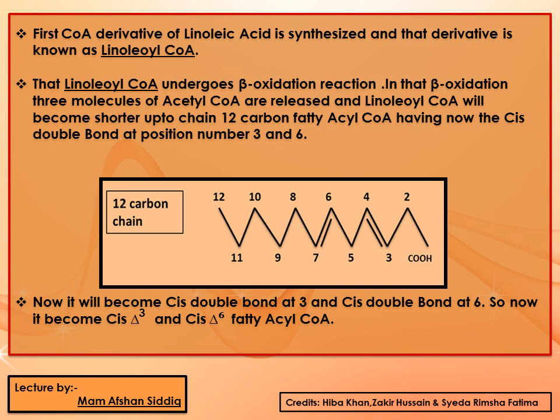During this beta oxidation reaction, three molecules of acetyl-CoA are released, and the linoleoyl-CoA is shortened to a 12-carbon fatty acyl-CoA. Previously the double bonds were at carbon number 9 and 12; after releasing three acetyl-CoA, the double bond positions shift to carbon number 3 and 6. This becomes cis-delta-3 and cis-delta-6 12-carbon fatty acyl-CoA.